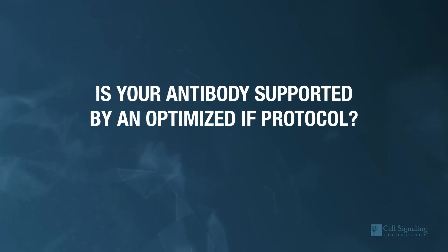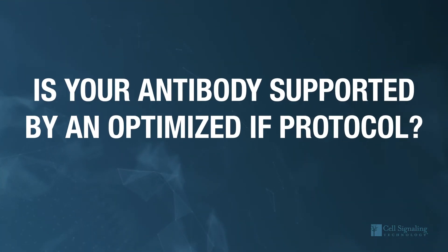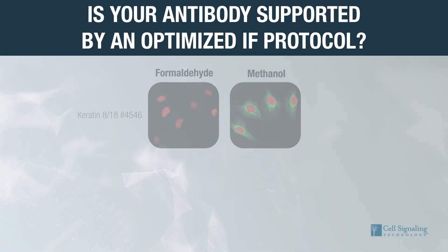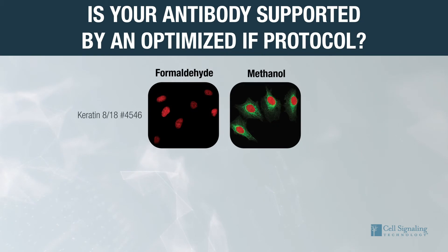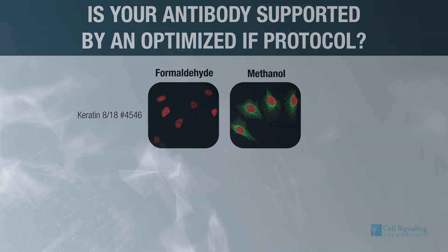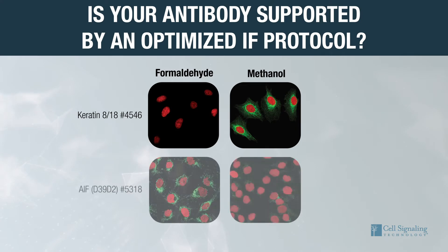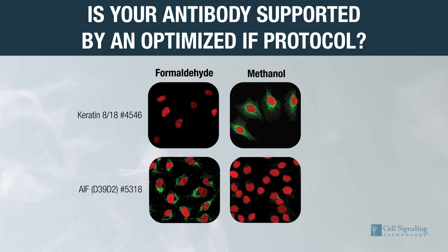Is your antibody supported by an optimized IF protocol? A side-by-side comparison of HeLa cells fixed using different fixation protocols shows that the Keratin 8/18 mouse monoclonal antibody works best with methanol fixation. In contrast, AIF XP rabbit monoclonal antibody works best with formaldehyde fixation.